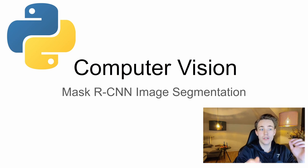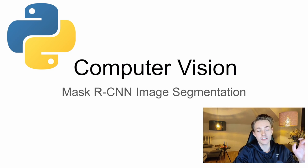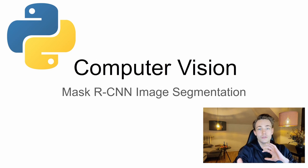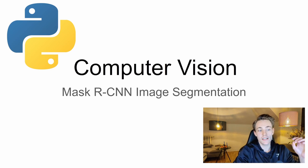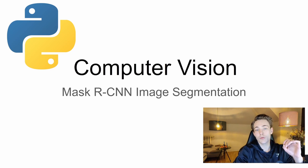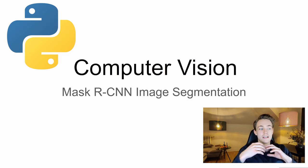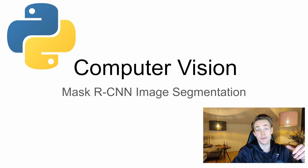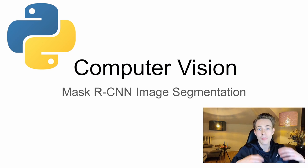Hey guys, welcome to a new video in this computer vision tutorial. In this video we're going to talk about Mask RCNN for image segmentation. First, we'll take a look at the model architecture of Mask RCNN. Then we'll see how to implement it in code, take an image, pass it through the Mask RCNN model, and get an output with image segmentation, all the classes, region of interest, and so on.